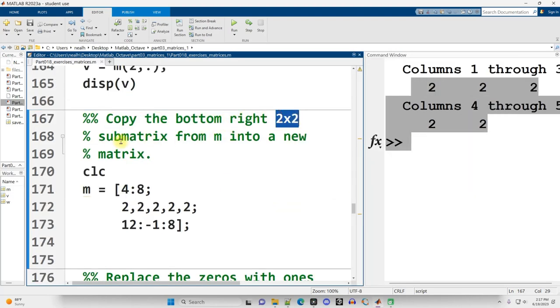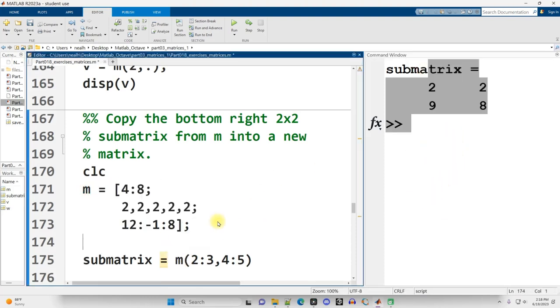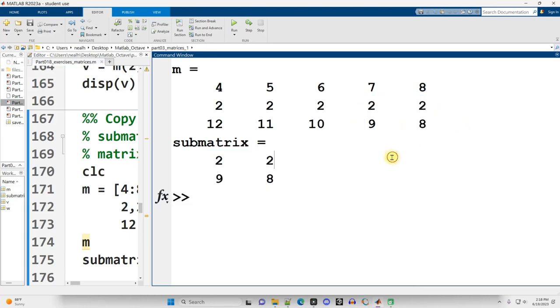Copy the bottom right 2x2 submatrix from M into a new matrix. I'm going to just name my new matrix submatrix and set it equal to M. And let's see, there's 2 rows and 5 columns. So rows 2 through 3 and columns 4 through 5 I think will be a 2x2 matrix. Let's run it. And there we go. So there's the bottom right 2x2 of values from M. Let's actually further verify that just by displaying out M. All right, there's M. There's the submatrix. You can see the values right there.